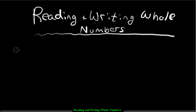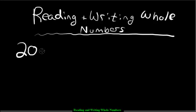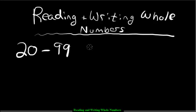Hey everybody. In this lesson, we're going to learn how to read and write whole numbers. Before I begin, I just want to mention one thing really quick. Whenever you're writing any number between 20 and 99, and the number doesn't have a zero at the end, you have to write what's called a hyphen in between the numbers.